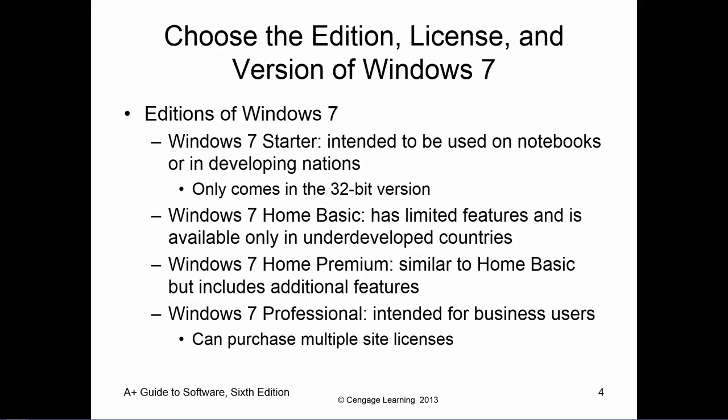The last one on the slide is Windows 7 Professional, which is mainly intended for business use. It has more networking capability, and you can purchase site licenses. Site licenses are important because Home and Starter normally come with a single license — you can only install it on one computer. Professional, however, allows specialized volume or site licenses to install it on multiple computers.